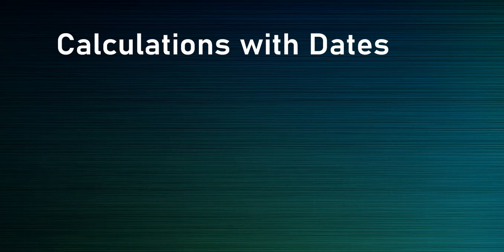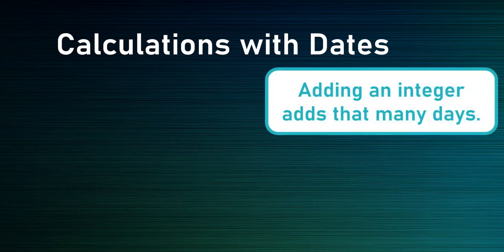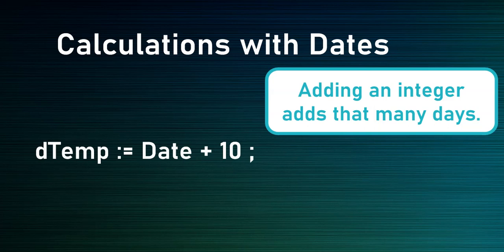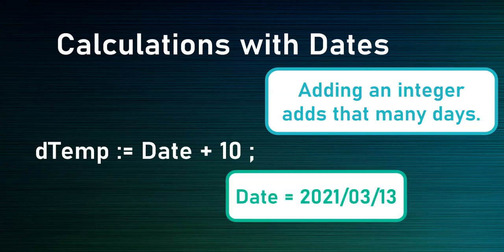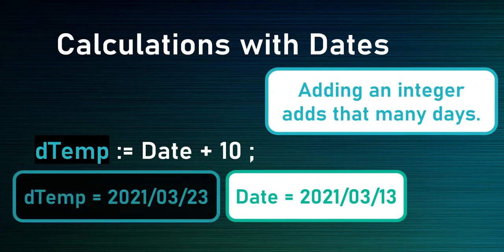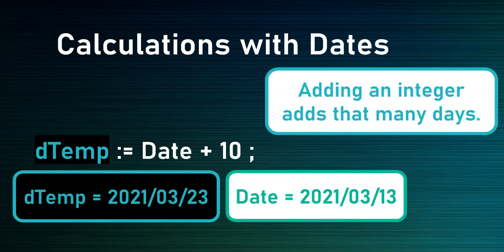Another calculation you can do is take an integer and add it onto a date, which will add that many days. So if I take today's date — let's pretend this video was done on the 13th of March — and I say Date plus 10, it takes that date and adds 10 days to it, which gets stored into a dtemp date-time variable. That value would end up being 10 days later: the 23rd of March 2021.